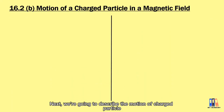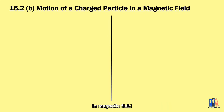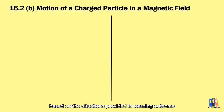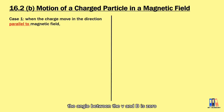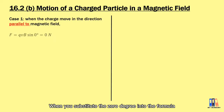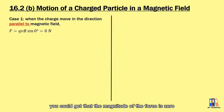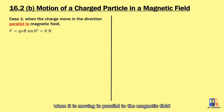Next, we're going to describe the motion of the charged particle in the magnetic field. For the first case, when the charge is moving in a direction parallel to the magnetic field, the angle between V and B is zero. Substituting zero degrees into the formula gives a force magnitude of zero, meaning there is no magnetic force acted on the charge when it moves parallel to the magnetic field.